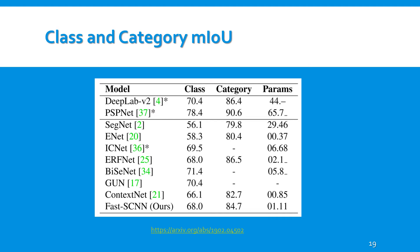These are the results of the paper's experiments. Fast SCNN was evaluated on the validation and test sets of the Cityscapes dataset and was also compared to other state-of-the-art real-time semantic segmentation approaches via the class and category mean of intersection over union. It does, however, perform slightly lower than BiSeNet and GUN.